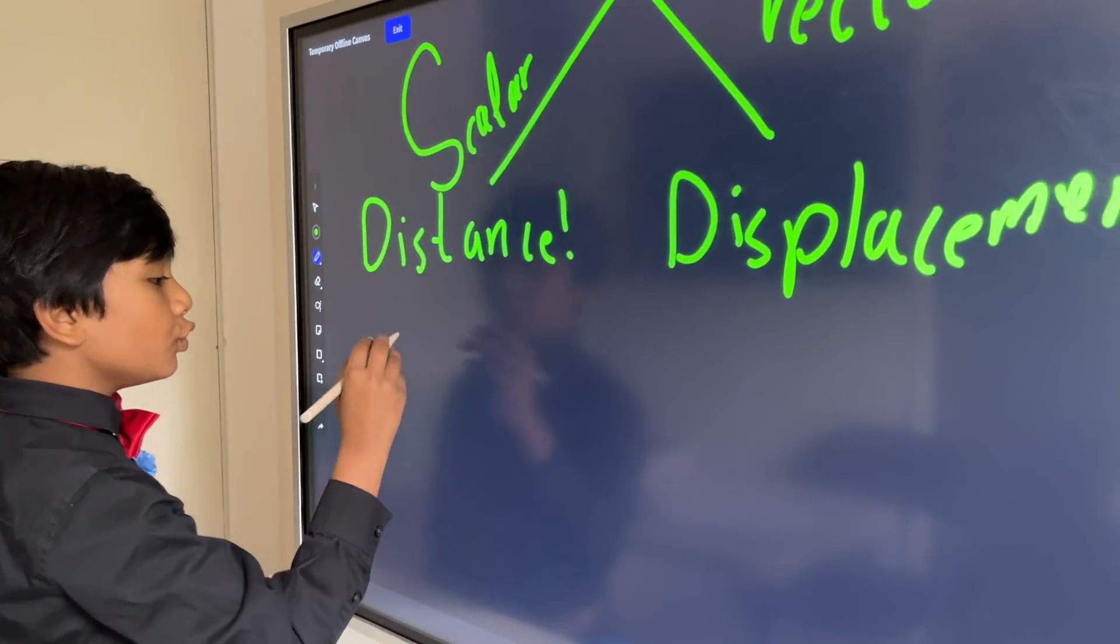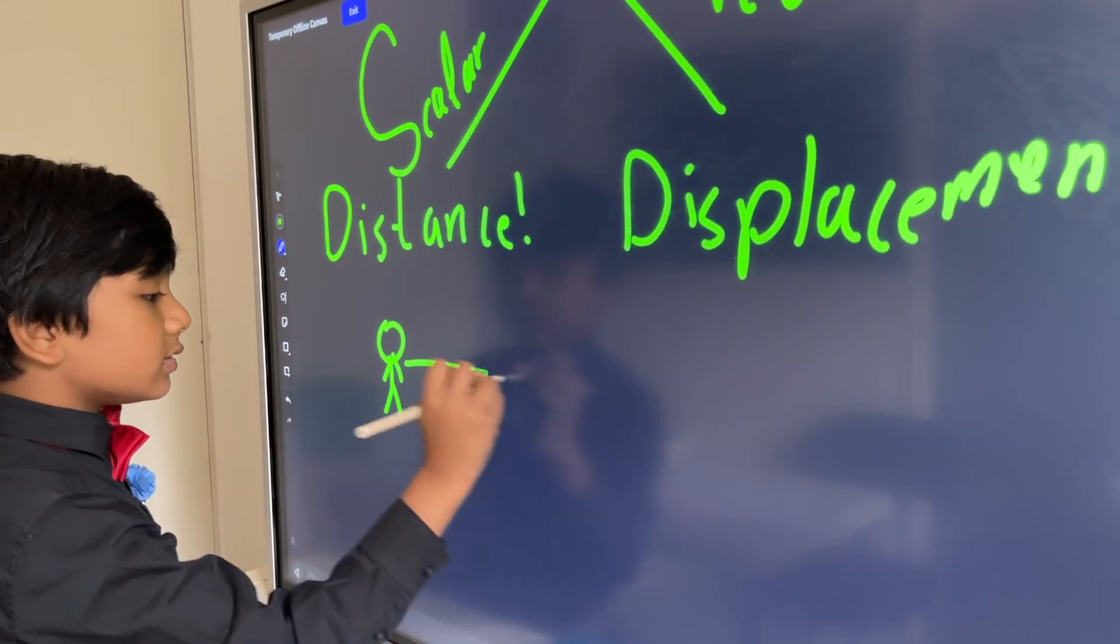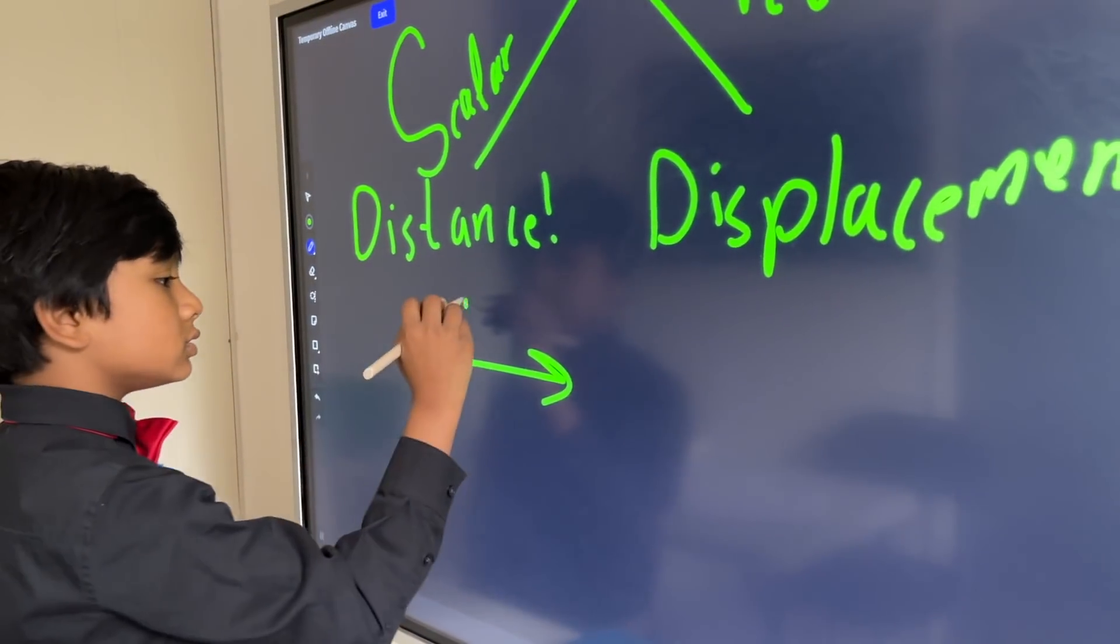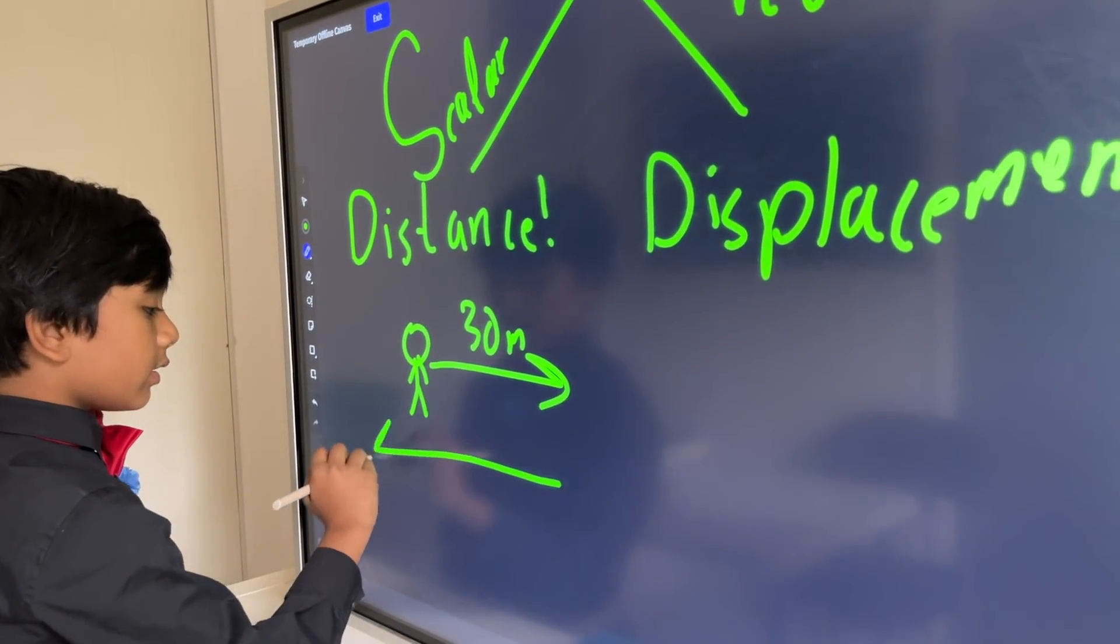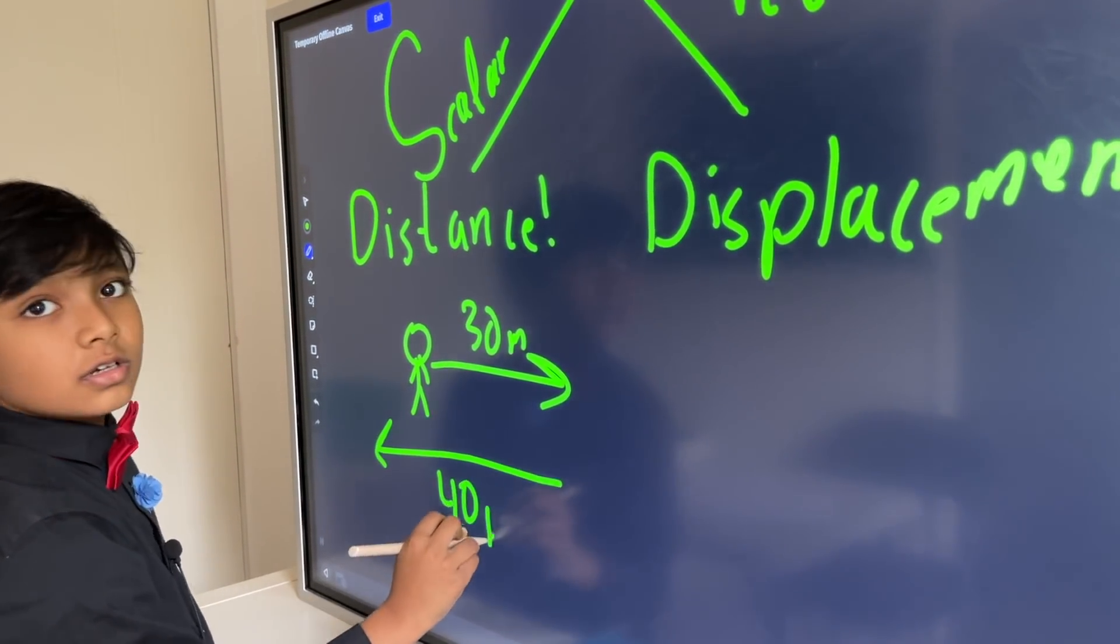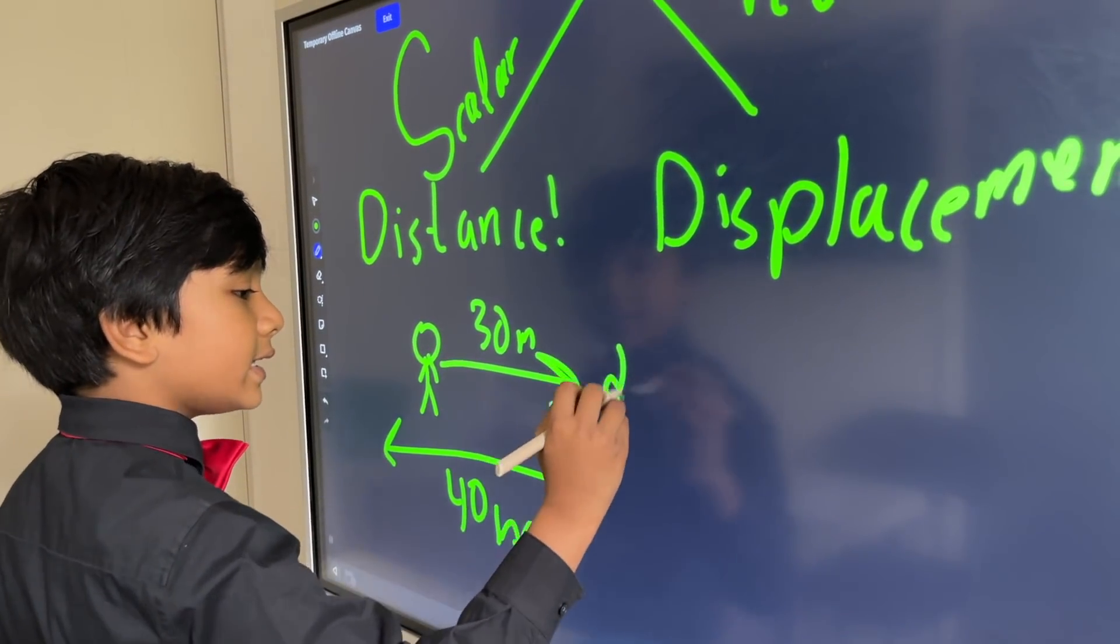So, let's say that you are walking this way, 30 meters. And then, you go back, 40 meters. Alright. So, what is the distance and the displacement?